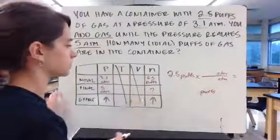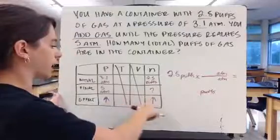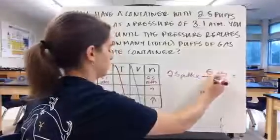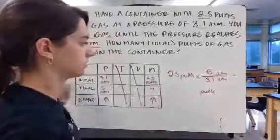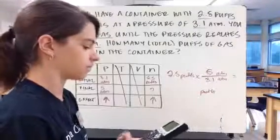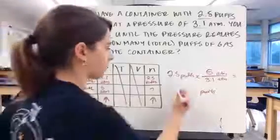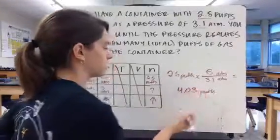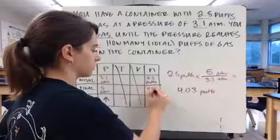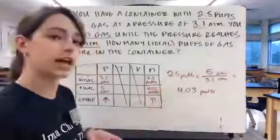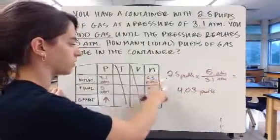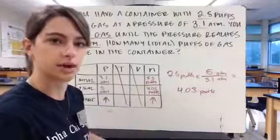So if we want our n to go up, our number of particles to increase, we need our bigger number on top and our smaller number on the bottom. So now if we do 2.5 times 5 divided by 3.1, we get 4.03 puffs. And that's what we could write in here. Now we're going to check. Does that make sense? Well, we said our number of puffs was going to increase. We went from 2.5 to 4.03. That is an increase in the number of puffs.